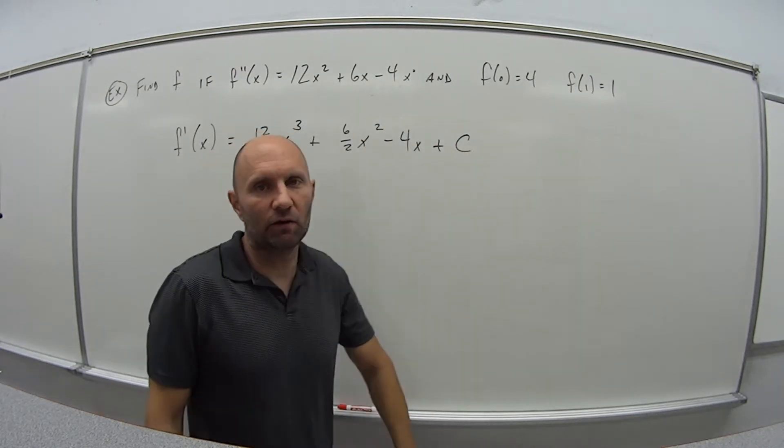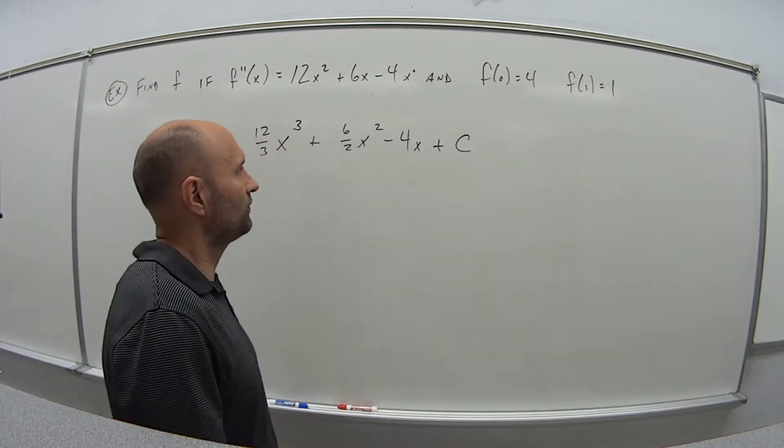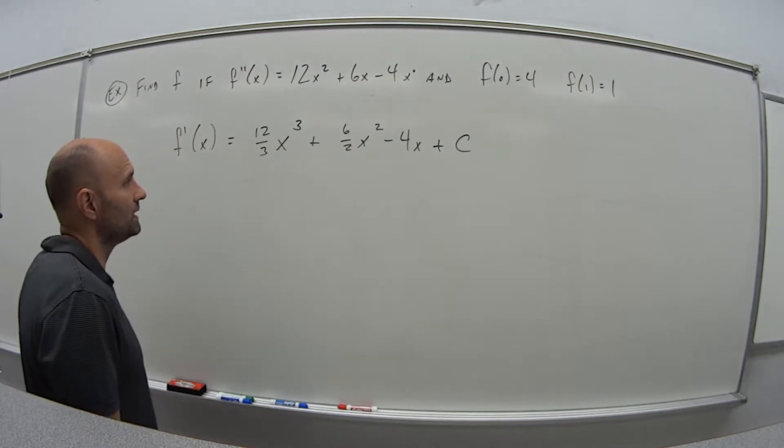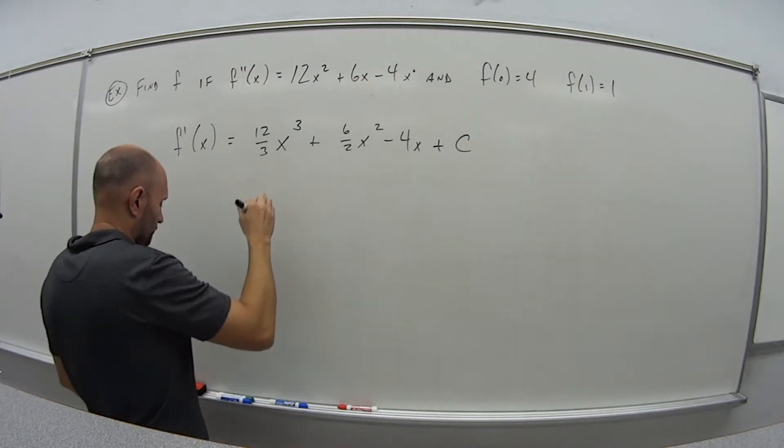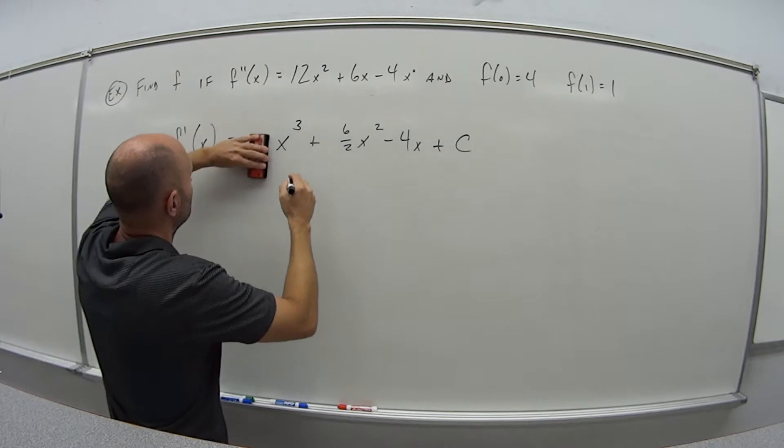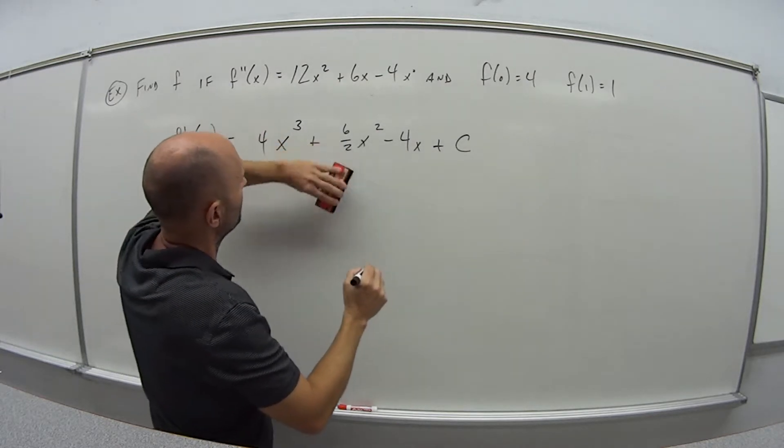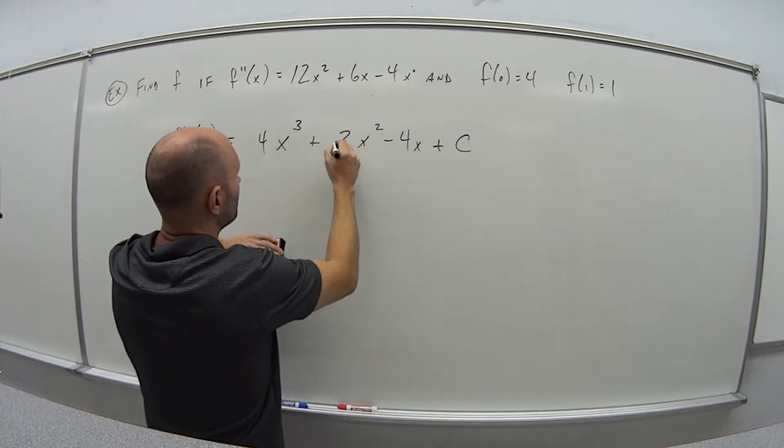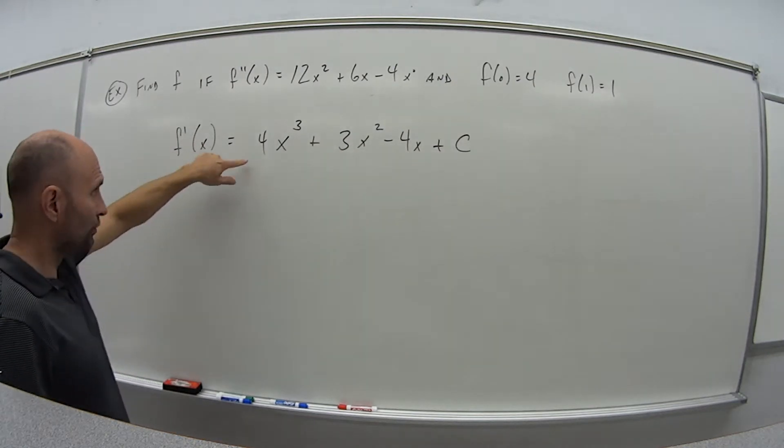And do not forget that here, or at the end things are going to be all messed up. You're not going to get the answer you need. So that's 12 divided by 3, that's 4. 6 divided by 2, that's 3. So that was f prime.